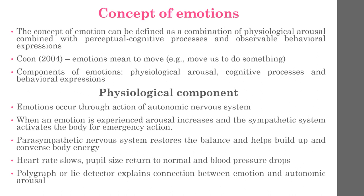The connection between emotion and autonomic arousal provides the basis for devices like a lie detector — more accurately called a polygraph. A lie detector is a device usually used by the police to record physiological changes in the body, such as changes in heart rate, breathing rate, and blood pressure as they question a person. The lie detector does not actually detect lies but rather measures emotional arousal by monitoring heart rate, blood pressure, breathing rate, and the amount of sweat on the hand while a person responds to questions.